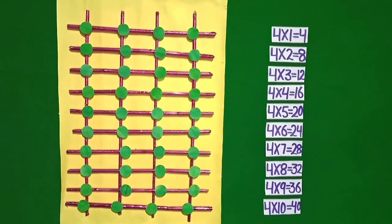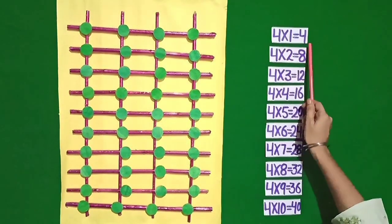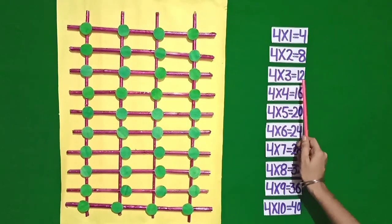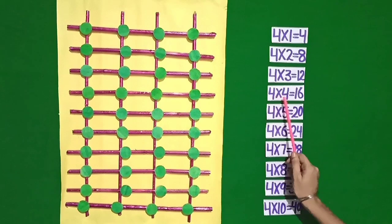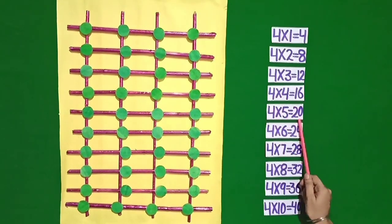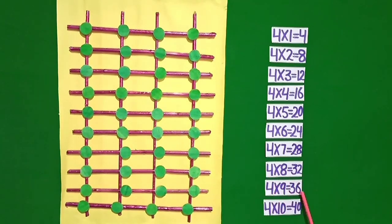Students, we have understood the table of 4. Let's recite it again. 4 ones are 4. 4 twos are 8. 4 threes are 12. 4 fours are 16. 4 fives are 20. 4 sixes are 24. 4 sevens are 28. 4 eights are 32. 4 nines are 36. 4 tens are 40.